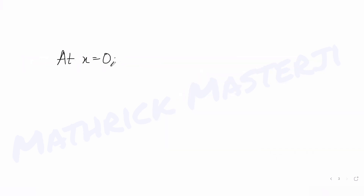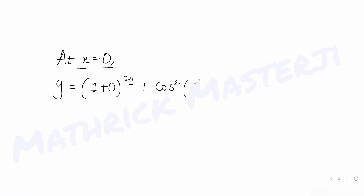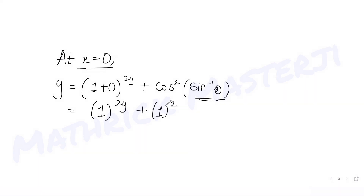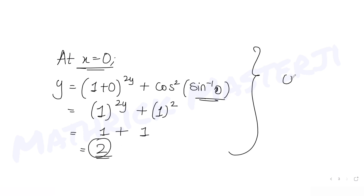When they have told me the x-coordinate as 0, I can find the y-coordinate by putting x = 0 into the expression. I get (1 + 0)^(2y) + cos²(sin⁻¹(0)). Solving further, this gives 1^(2y) + cos²(0). Since sin⁻¹(0) = 0, we get cos(0) squared, which is 1 squared, and 1 raised to anything is always 1.